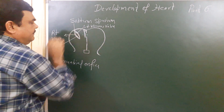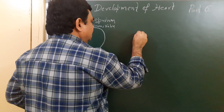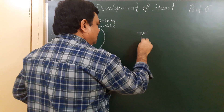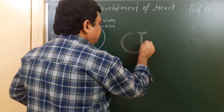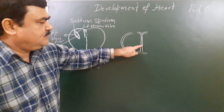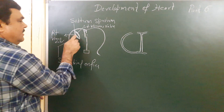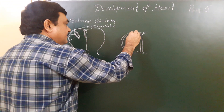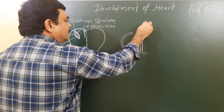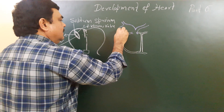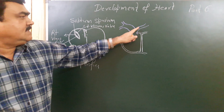If you take a section at this level you'll find the right venous valve, the left venous valve. Here is the sinus venosus — this is the left arm and this is the right arm.